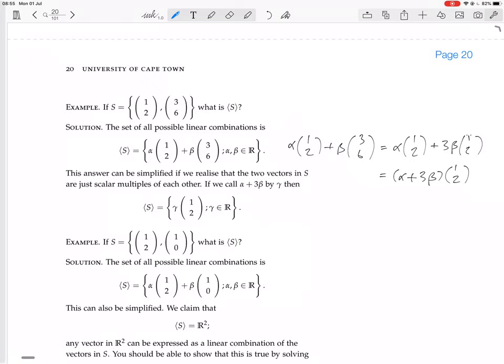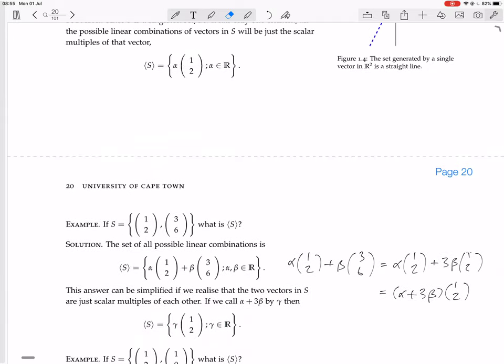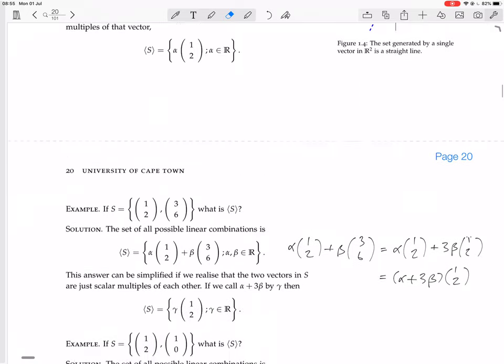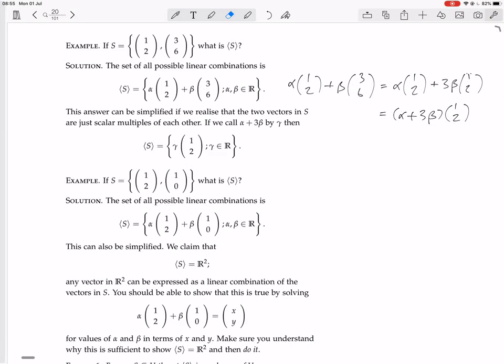So, that alpha plus 3 beta, if alpha and beta are any real numbers, that alpha plus 3 beta is also just any real number. So, we could just call it gamma. As they do here, they call it gamma. And so, the set generated by S is just all the multiples of (1,2), where the gamma that multiplies it is any real number. And that's exactly the same as the previous set we had. So, these two sets, the second in just this one vector and the second in these two vectors that are multiples of each other, they generate the same set.